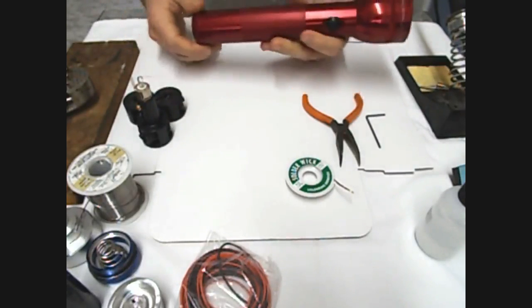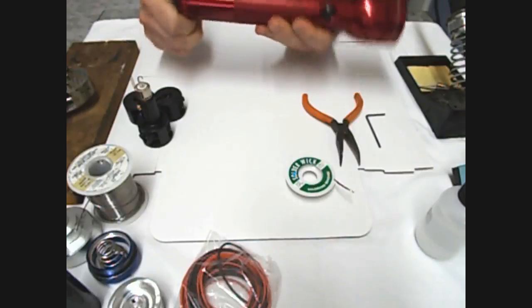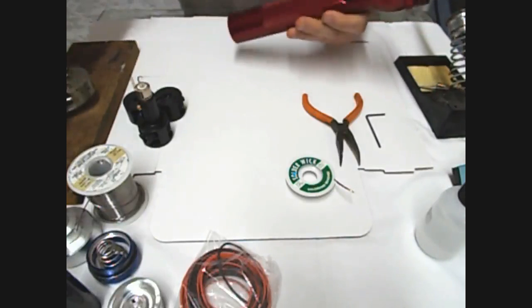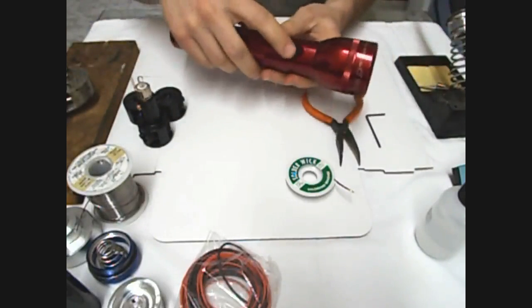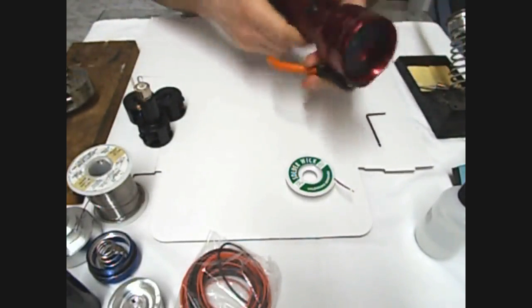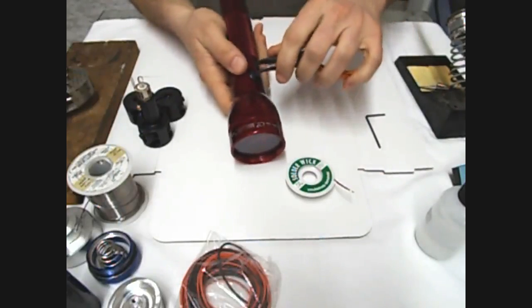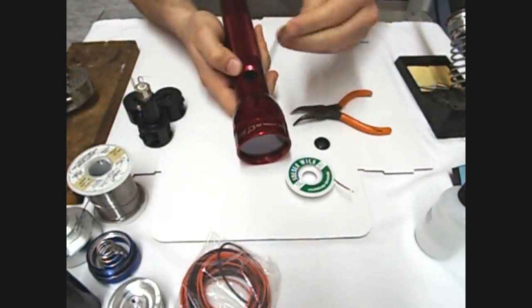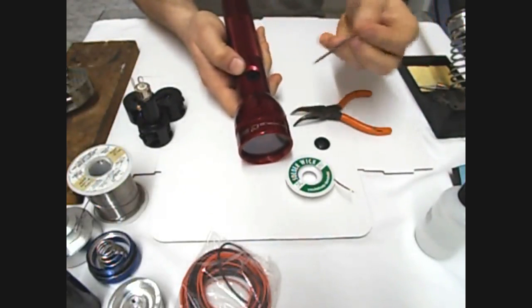So the first thing that we need to do is get our mag light and get the switch out of the bottom. We need to pop the tail cap off and then remove this little rubber boot and click the switch into the on position.